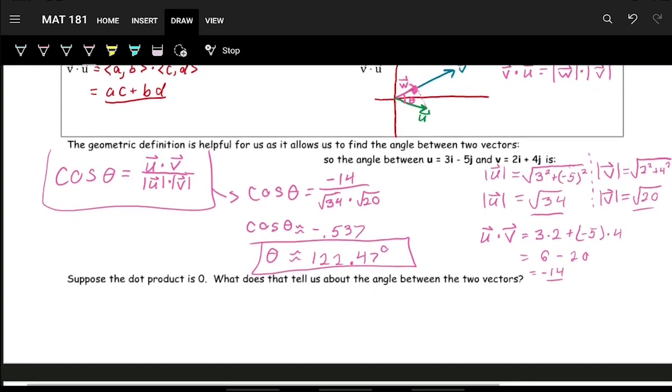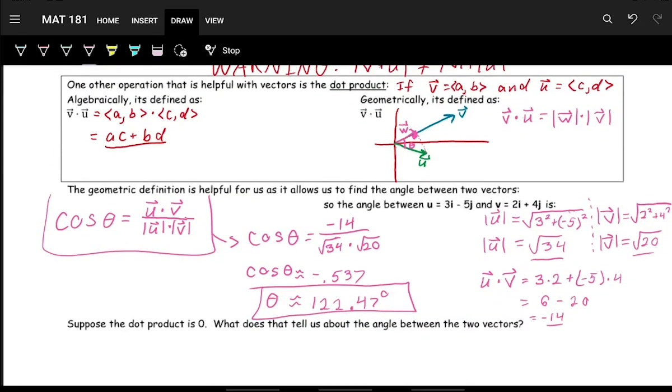And then kind of an afterthought, if the dot product is 0, then that means when we do this projection down here, the magnitude of this w vector, that vector along v that creates the right triangle, that magnitude would be 0, which means this w vector wouldn't be a vector at all. It'd just be a point. And so that means that u is actually directly already at a right angle to v.